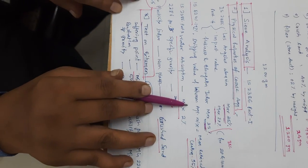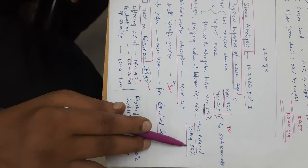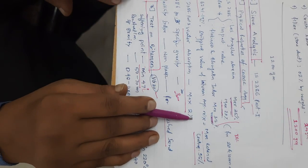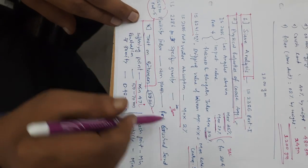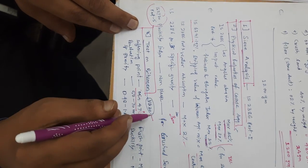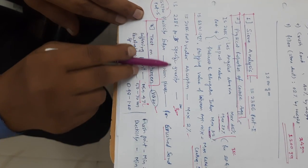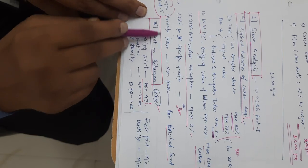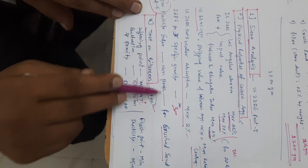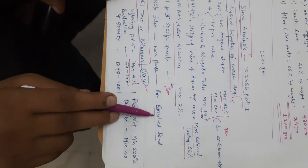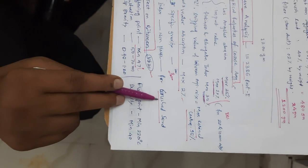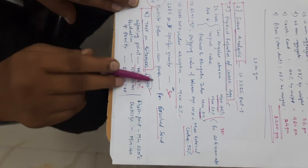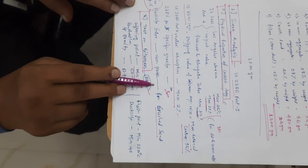The stripping value of aggregate — maximum retained coating is 95%, meaning up to 5% stripping is permissible. Water absorption is maximum 2%, and specific gravity should be determined properly. We also have to find out the plasticity index, which will be used for crushed sand. Sometimes, if someone is using river sand, we have to find out whether plasticity is present in that or not.